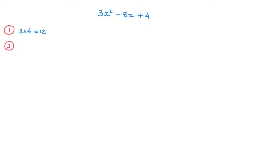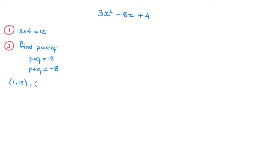Step 2 is to find two factors of 12 — the number found in step 1 — called p and q, such that p times q equals 12 and p plus q equals the coefficient of the middle term. In this case the middle term is negative 8x, so the coefficient is negative 8, meaning p plus q must equal negative 8. The pairs of factors of 12 are: 1 and 12, 2 and 6, and 3 and 4.